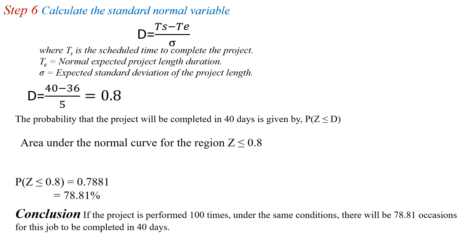In conclusion, the probability of the project being completed in 40 days is 78.81%. If the project is performed 100 times under the same conditions, there will be a 78.81% chance for the job to be completed in 40 days. This is the complete solution.